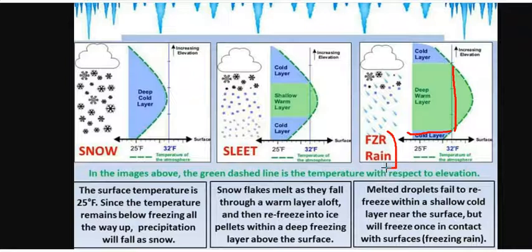For plain rain, all levels are warmed above 32 degrees and everything melts — that would be plain rain. These are the three major precipitation types that are very difficult to forecast in the winter.